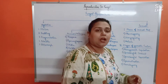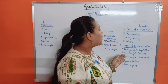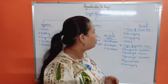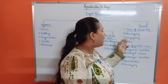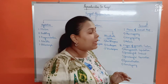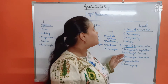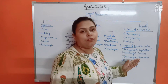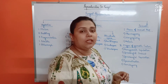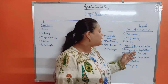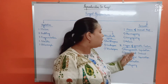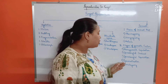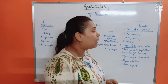Moving to sexual reproduction in fungi — sexual reproduction in fungi consists of three phases: plasmogamy, karyogamy, and meiosis. Likewise, sexual reproduction in fungi also possesses five types of gametic fusion: planogametic copulation, gametangial contact, gametangial copulation, spermatization, and somatogamy.